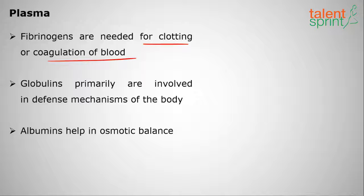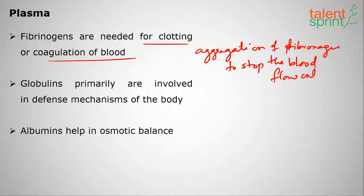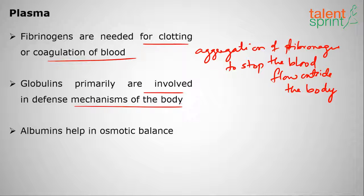Fibrinogens are needed for clotting or coagulation of blood. Clotting means the aggregation of proteins, particularly fibrinogens, to stop the blood flow outside the body. Globulins are primarily involved in defense mechanisms to fight diseases like antibodies, and albumins maintain osmotic balance.